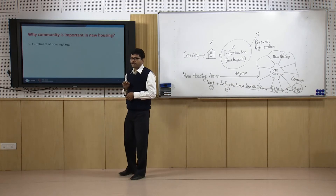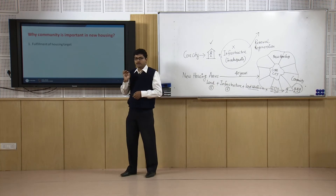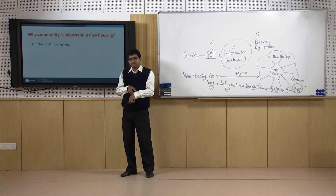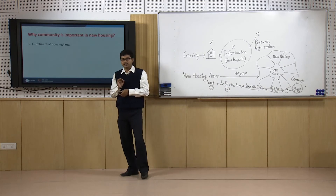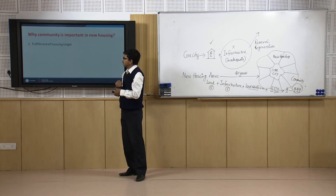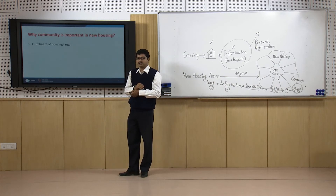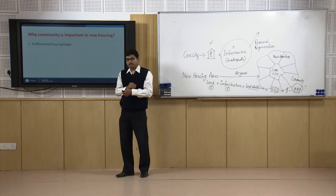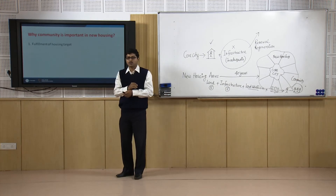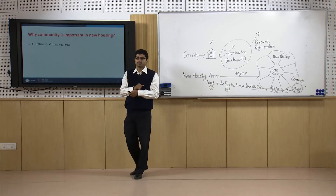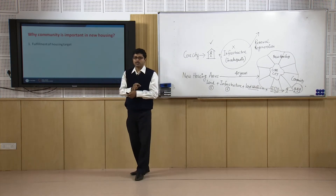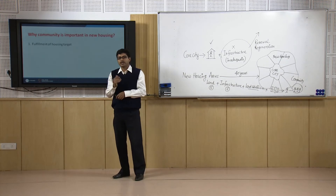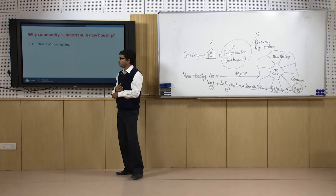The first objective of community development is to fulfill the housing target. Every housing project — private, government, or organically developed — has the basic objective of fulfilling the need for shelter. If there is no community development, the fulfillment of the housing target is not achieved. Only buildings are constructed but people are not there. Or sometimes houses built for lower income groups are occupied by middle or higher income group people. Both situations represent non-fulfillment of the housing target.